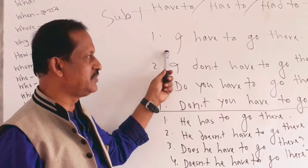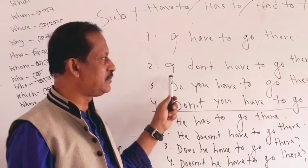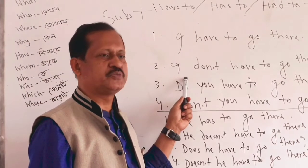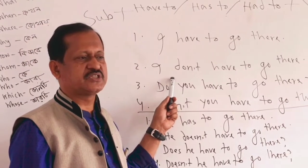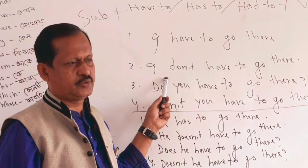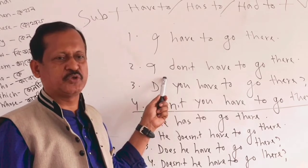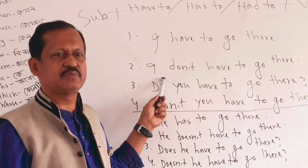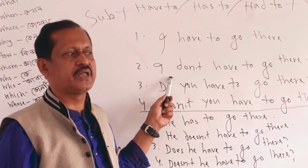This is an affirmative sentence. Now let's make it negative: 'I don't have to go there' — meaning we do not need to go there. Where there is no obligation to go somewhere, we use the negative form: 'I don't have to go there.'